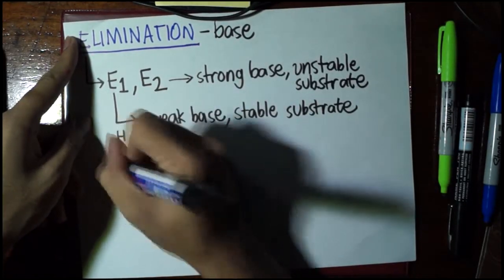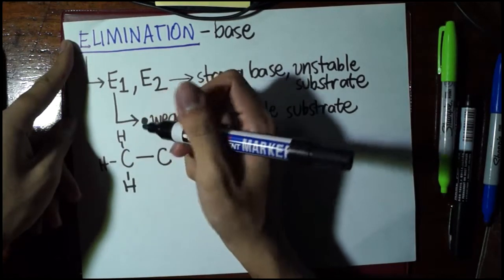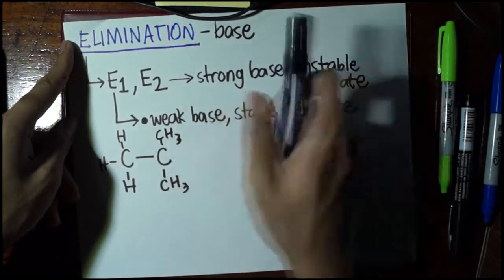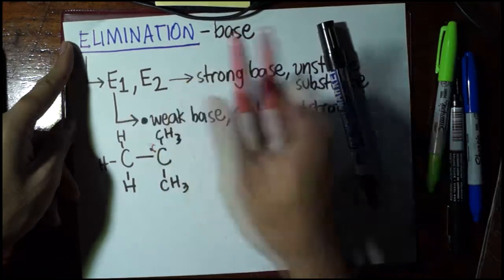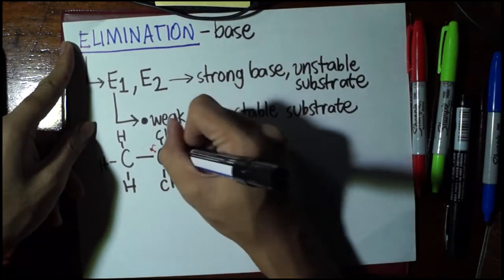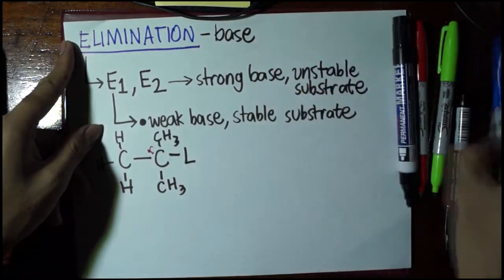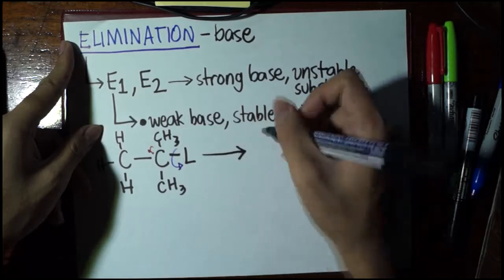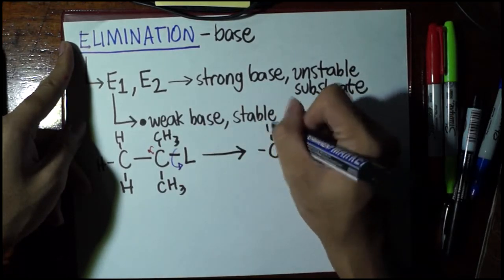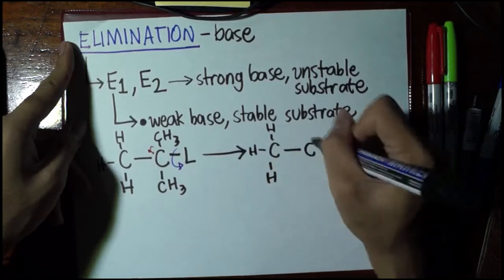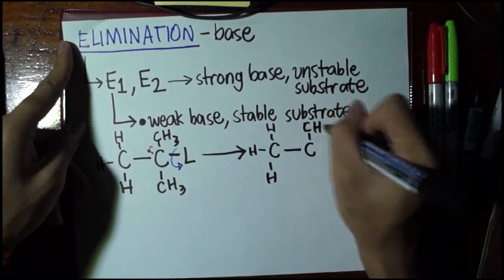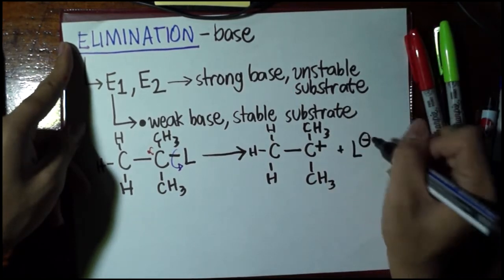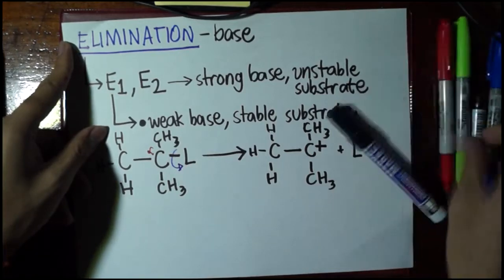Let's draw first E1, and since I'm going to draw E1, I'm going to draw a stable alpha carbon. Let's say that I'm drawing here a tertiary carbon as the alpha carbon, and of course the leaving group should be directly attached to the alpha carbon. Just like I said, the leaving group leaves first in E1, then what happens is that the carbon here now becomes positively charged, because the leaving group possesses the electrons when it has left.